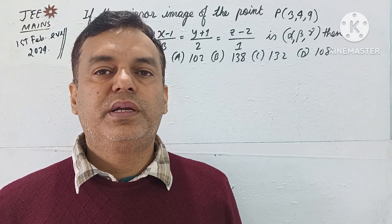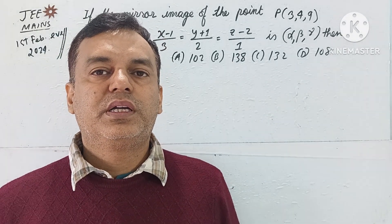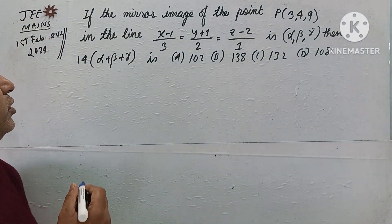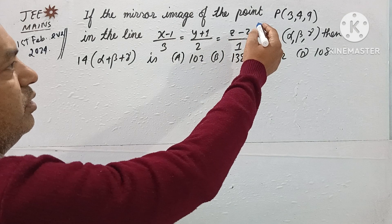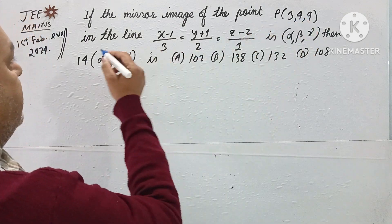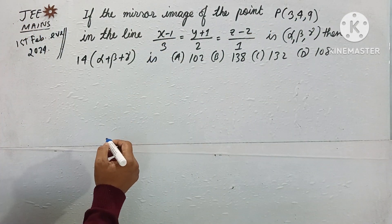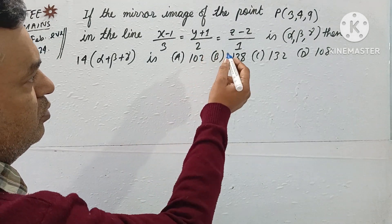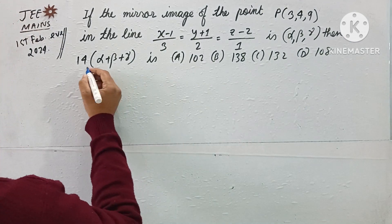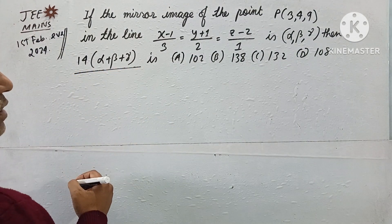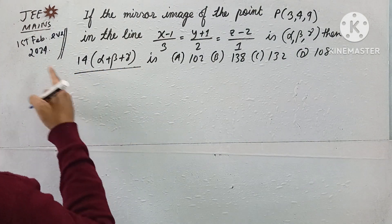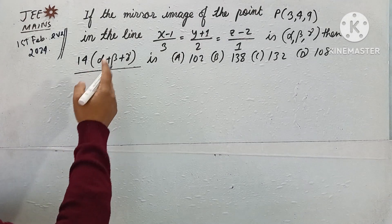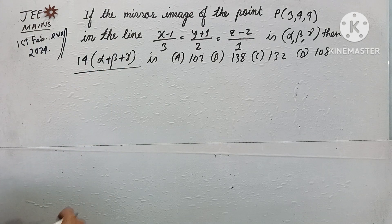Hello and welcome to the video. In this video we will solve JEE Mains 2024 3D set problem. If the mirror image of the point P(3,4,9) in the line (x-1)/3 = (y+1)/2 = (z-2)/1 is (α,β,γ), then find 14(α+β+γ). This question was asked in the first February evening session.